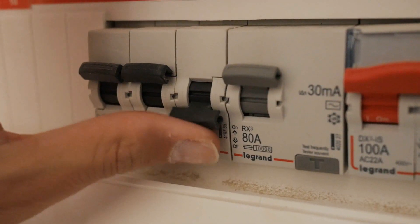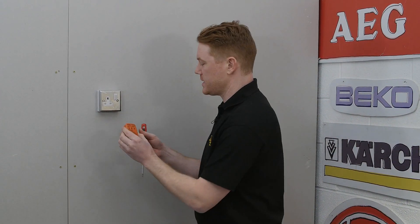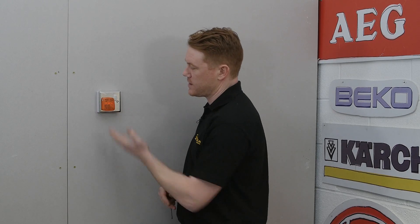Once you're happy that the socket is firmly in place, reset the relevant fuse at your fuse board. You can then grab your handy plug-in socket tester, and there we have it - all three lights, meaning that the socket is wired correctly.